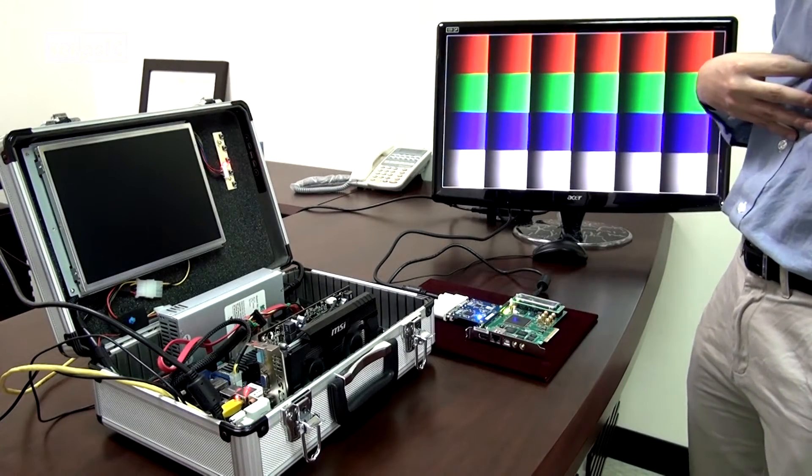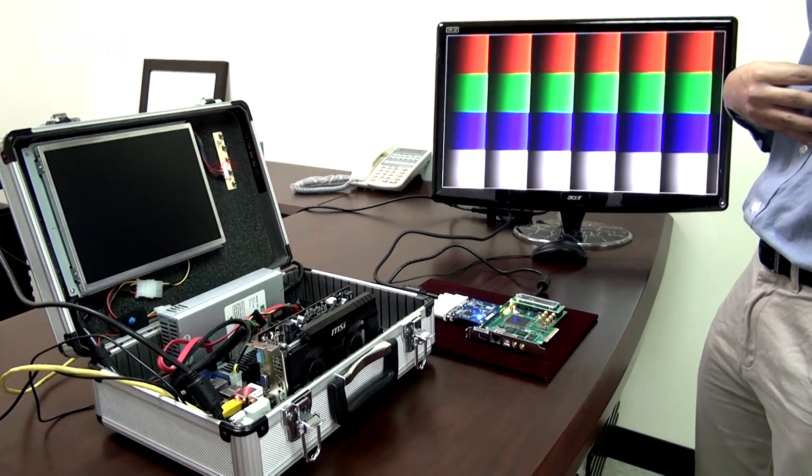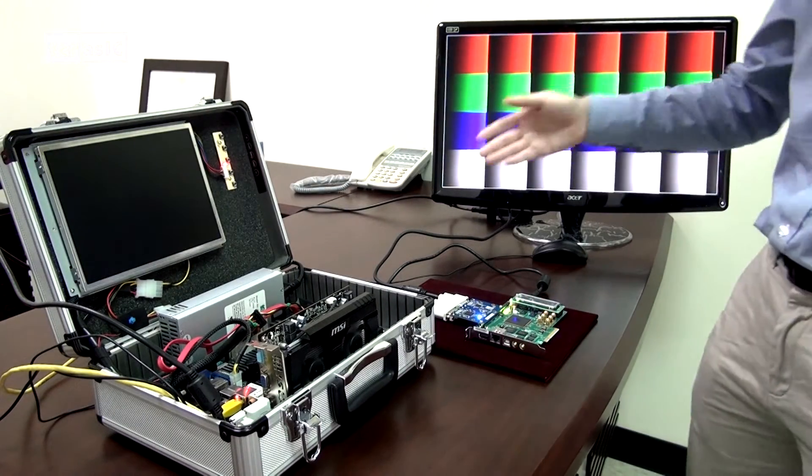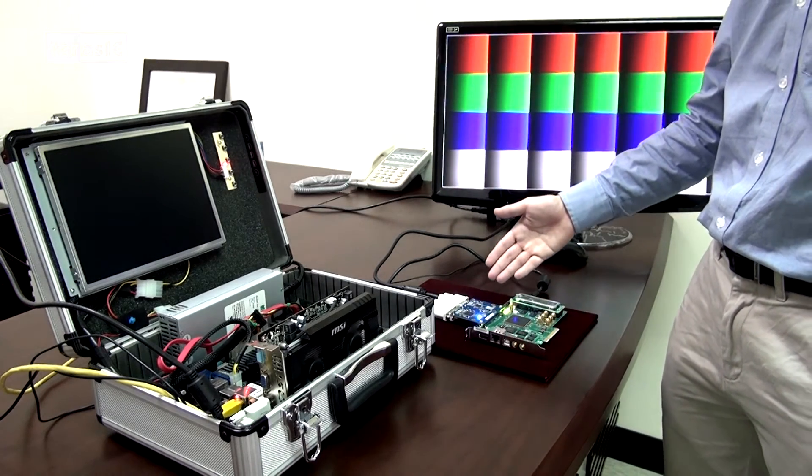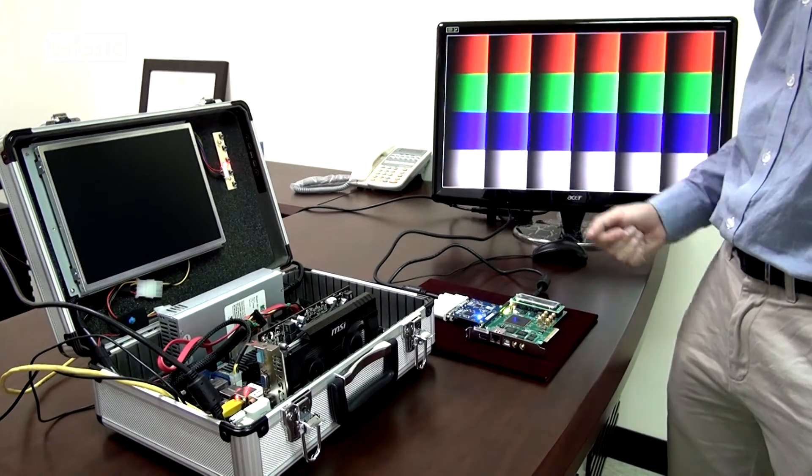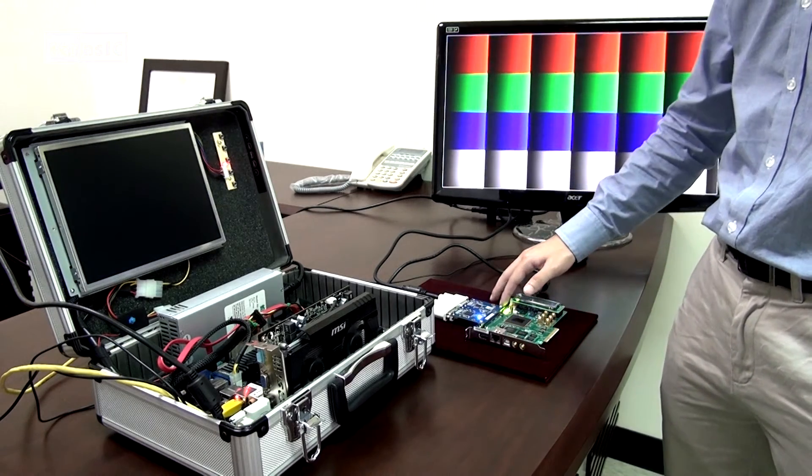Our second demonstration for today is a simple loop back test where we have our DVI signal coming in through the FPGA and then sending it out again through the TX port. I can switch to that mode by pressing our push button.